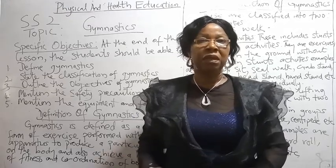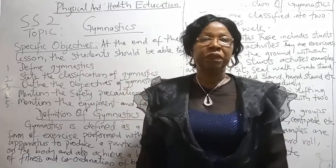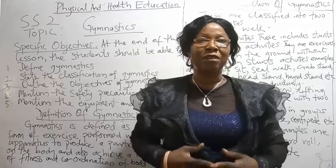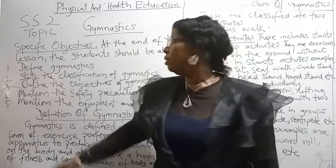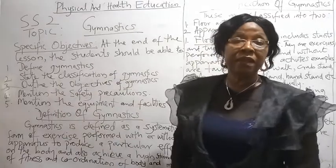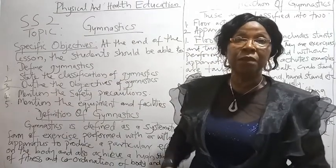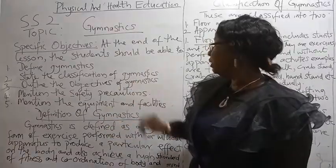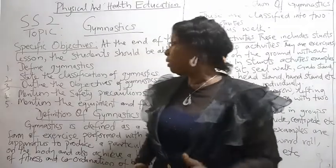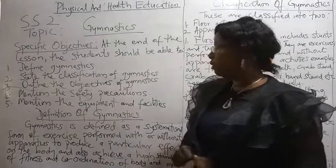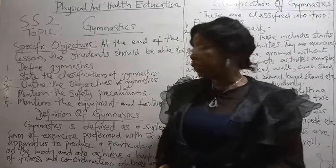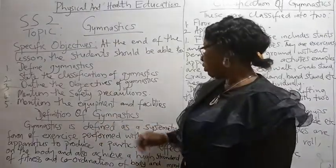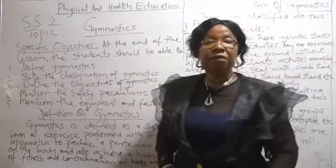The topic is Gymnastics. Let's see to the objectives — that is, the things you derive at the end of the lesson, the specific objectives. At the end of the lesson, students should be able to: 1. Define gymnastics. 2. Study the classification of gymnastics. 3. Outline the objectives of gymnastics. 4. Mention the safety precautions. 5. Mention the equipment and the facilities.